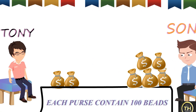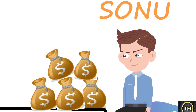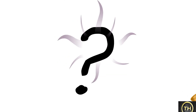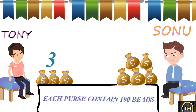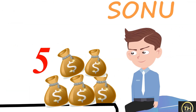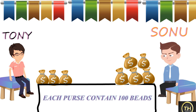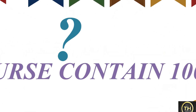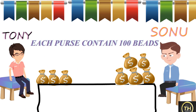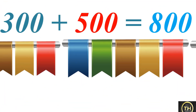Tony has 3 purses, each containing 100 beads. Sonu has 5 purses. So, how many purses altogether? Yes, 3 plus 5 is equal to 8 purses. How many beads altogether in the purses with Tony and Sonu? Well, 300 plus 500 is equal to 800 beads.